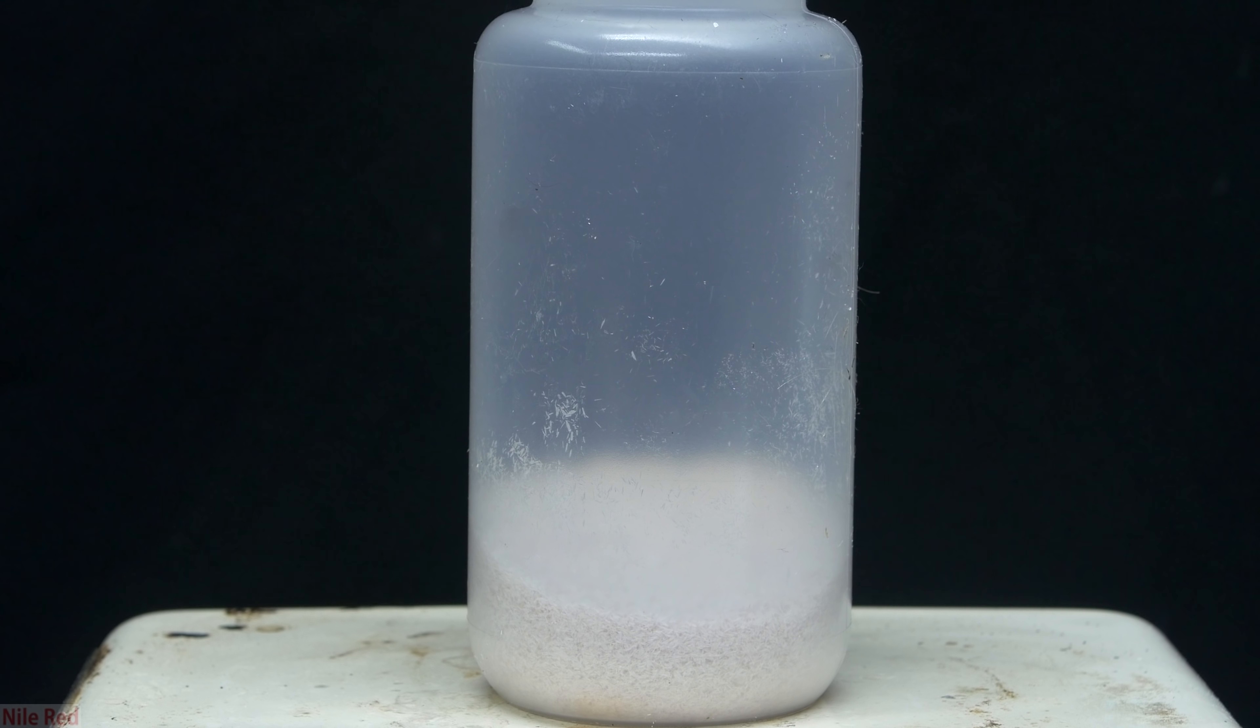I transferred everything to a Nalgene bottle for storage, and at this point, you can see that it's not really pink, but it still is a little bit off-white. In the end, I was left with nearly the theoretical amount of anhydrous oxalic acid, which was about 43 grams.